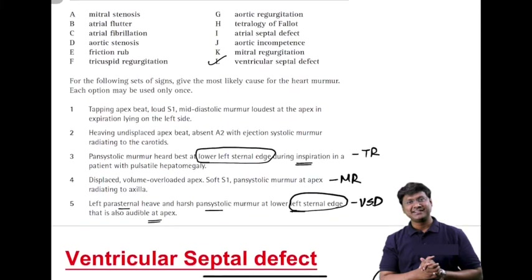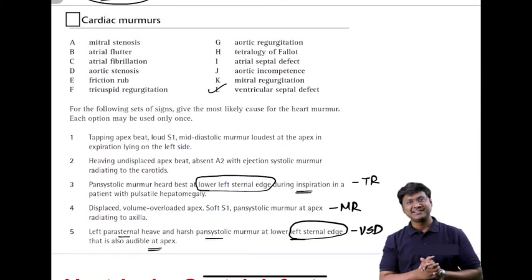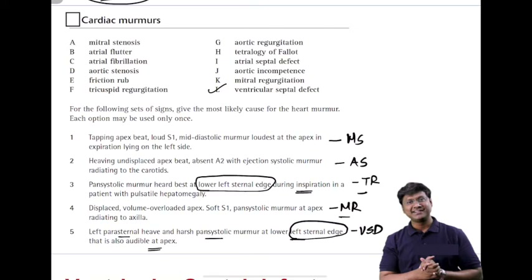In summary: clinical scenario 1 is mitral stenosis, 2 is aortic stenosis, 3 is tricuspid regurgitation, 4 is mitral regurgitation, and 5 is VSD. If you liked this video, press the like button and comment which topics you want for further revision in subsequent days. Thank you very much.